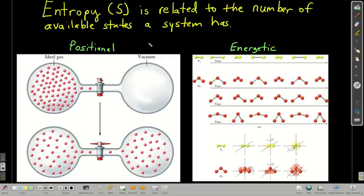So entropy, what it is, it's related to the number of available states that a system has. Some people call it disorder or randomness, but that's not really accurate. There are two types of entropy we're going to deal with, positional and energetic, and they're definitely related to each other.